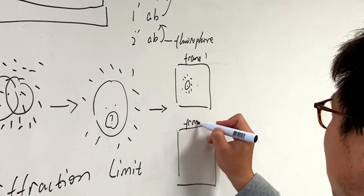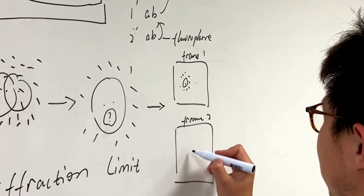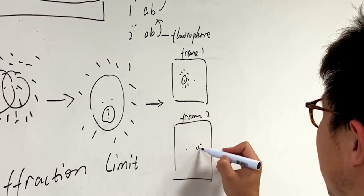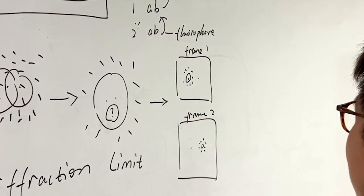And in frame two, the other molecule fluoresces, and the molecule right next to it does not fluoresce.